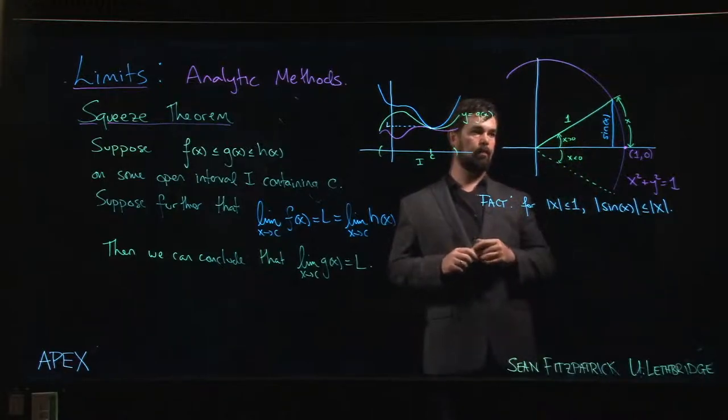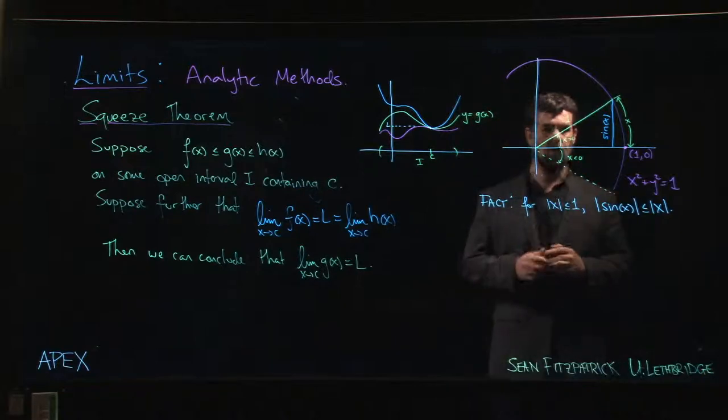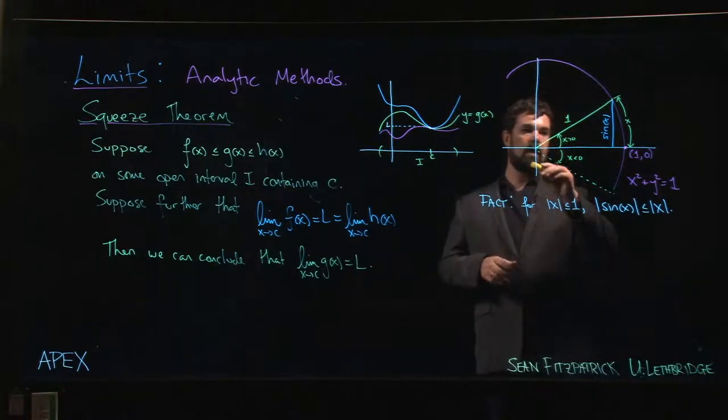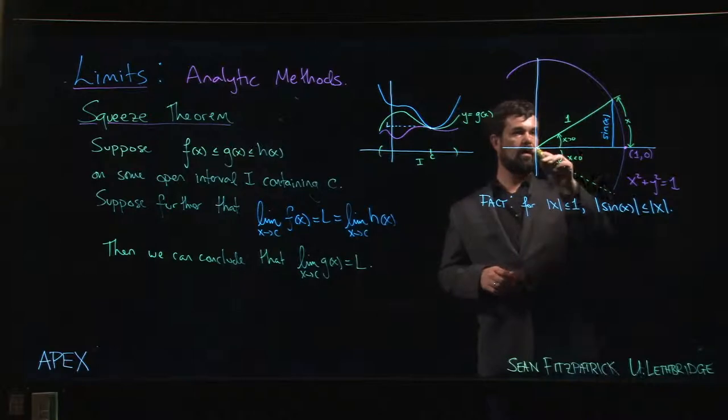So once you establish it for absolute value of x less than or equal to 1, you have it for all x. Now, this assumption here is useful because it puts us in the first quadrant, or first or fourth, but let's focus on the first quadrant. So x is some first quadrant angle. And here's our unit circle. So we're going to draw the angle like this.